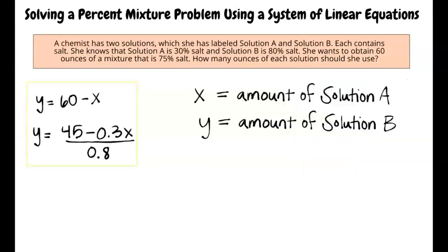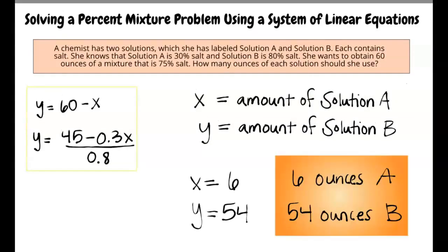Recall that x was defined as the amount of solution A that is added to create the new mixture, and y is the amount of solution B that is added to create the new mixture. So, the scientist must use 6 ounces from solution A and 54 ounces from solution B to create the new mixture.